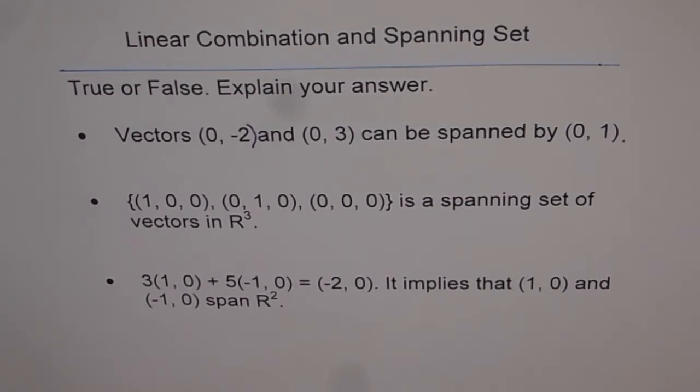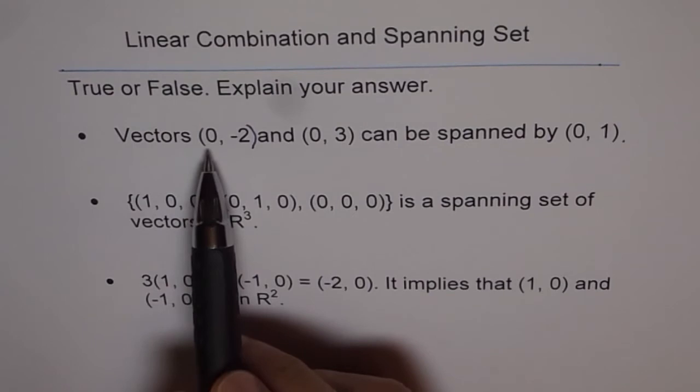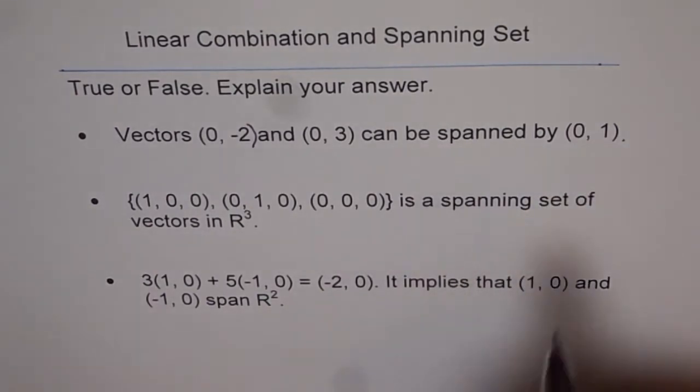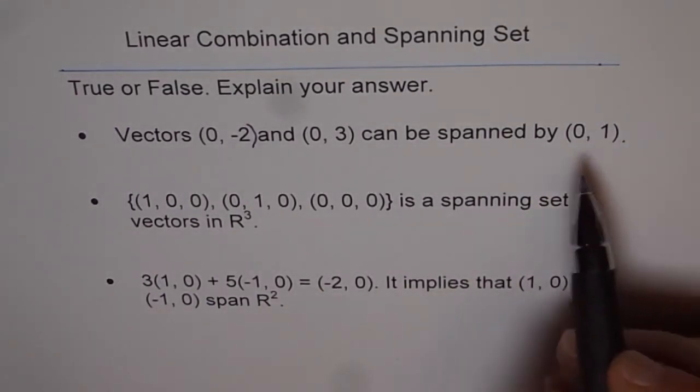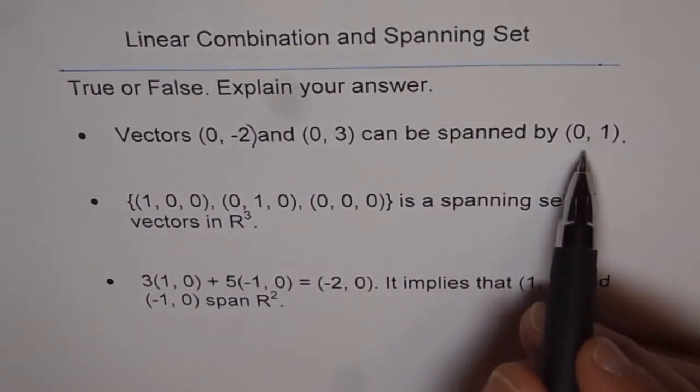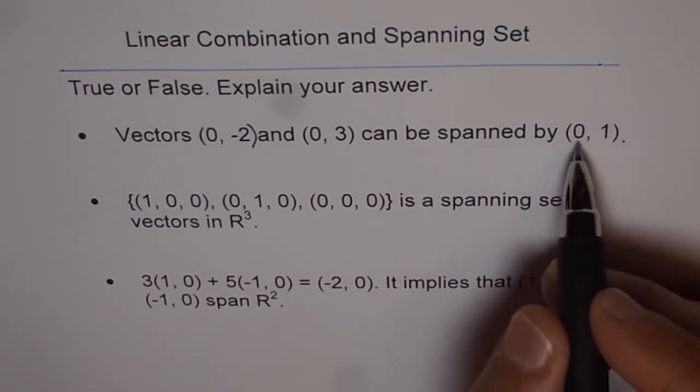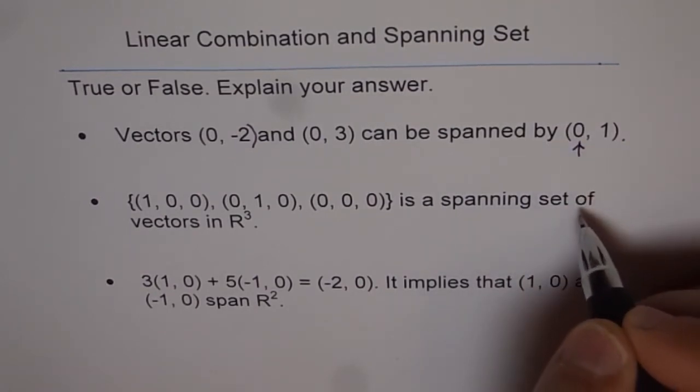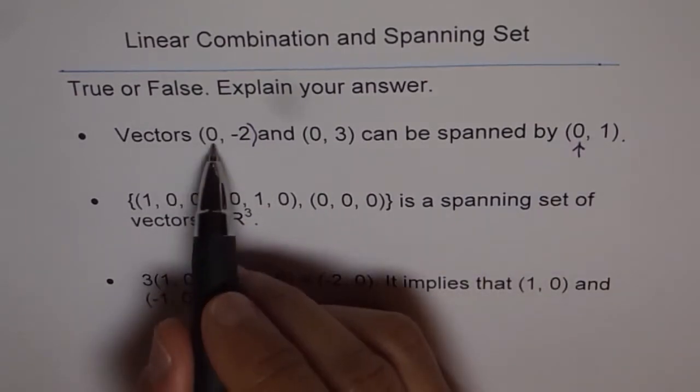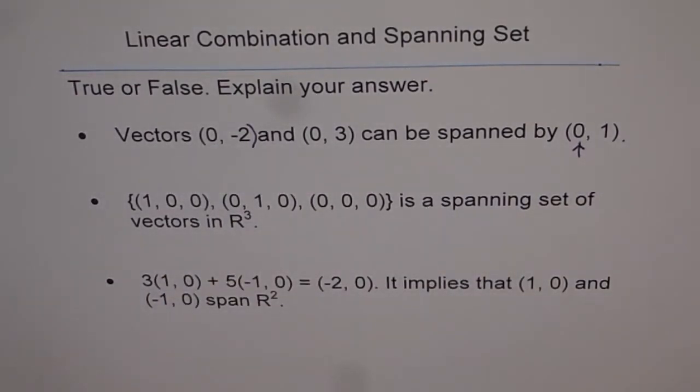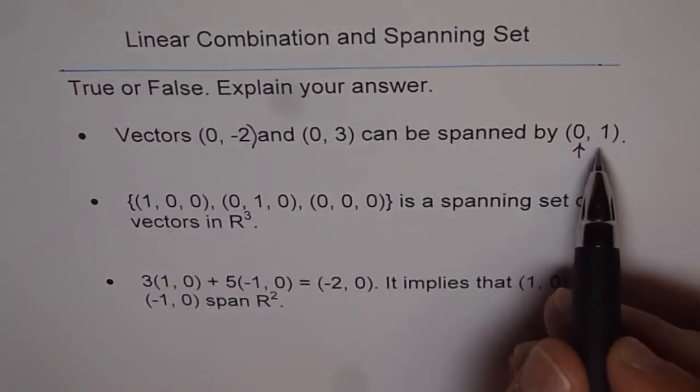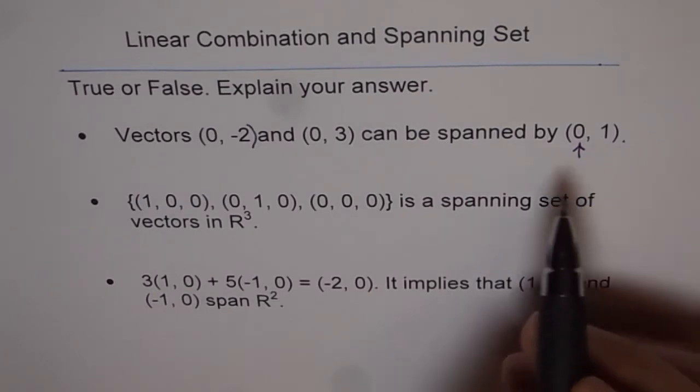Now the very first one given to us is vectors (0,-2) and (0,3) can be spanned by (0,1). Is it true or false? So if we can span (0,-2) by (0,1), that means we could write this as a linear combination. Now here there is only one vector. And what you notice here is that its component along x is 0. And the components for the given vectors is also 0. That means the given vectors are collinear with the vector which we want to span with.